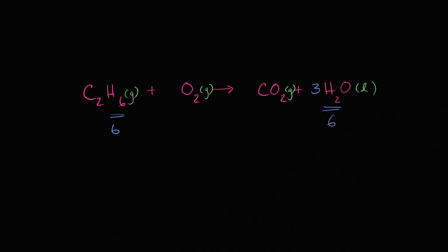Now let's go to carbon — remember, I'm saving oxygen for last. Carbon on the left-hand side: I have two carbons. On the right-hand side I only have one right now, but I can change that easily. Instead of having one molecule of carbon dioxide, I can have two molecules of carbon dioxide. Now my carbons are balanced: two carbons on each side.